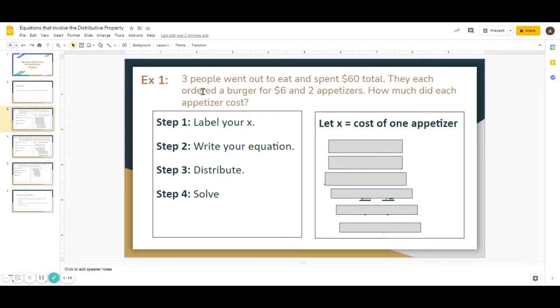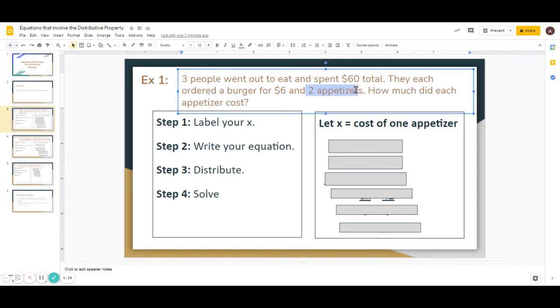So each person, they ordered a burger that's $6. So eventually down the line, we're going to have to multiply $6 times the three. And they ordered two appetizers. And the appetizers, we don't know what the cost is for that. So we're going to call that 2x. Because the cost of one appetizer is x, and we're looking for the cost of two appetizers. So it would be 2x.